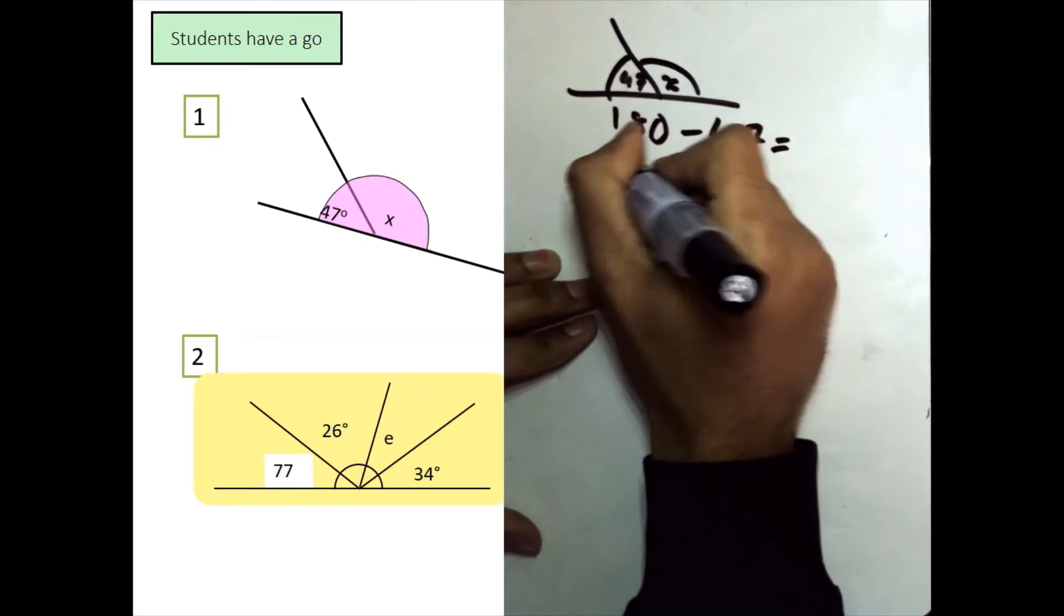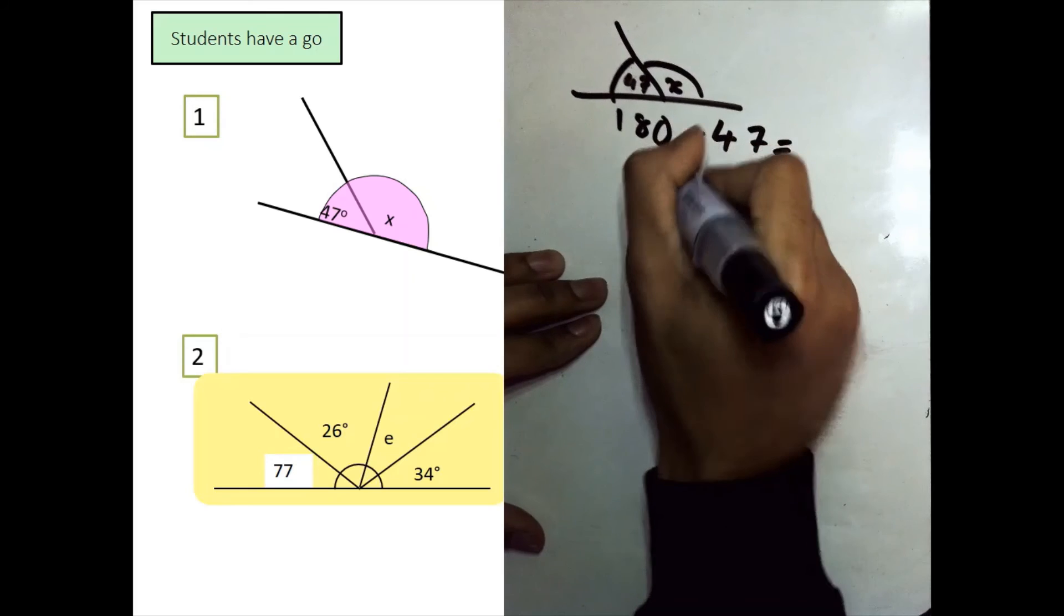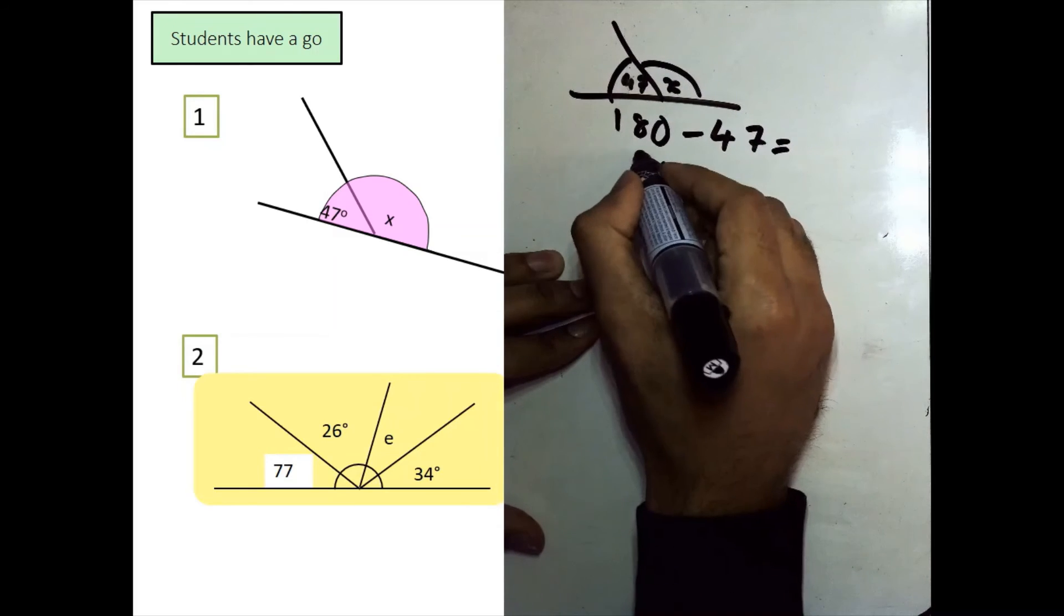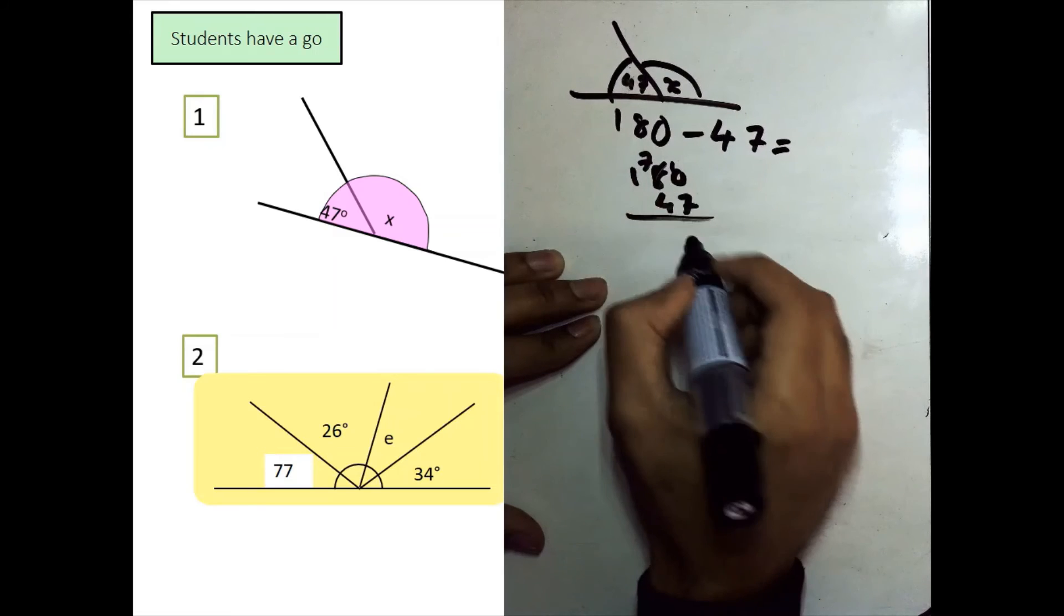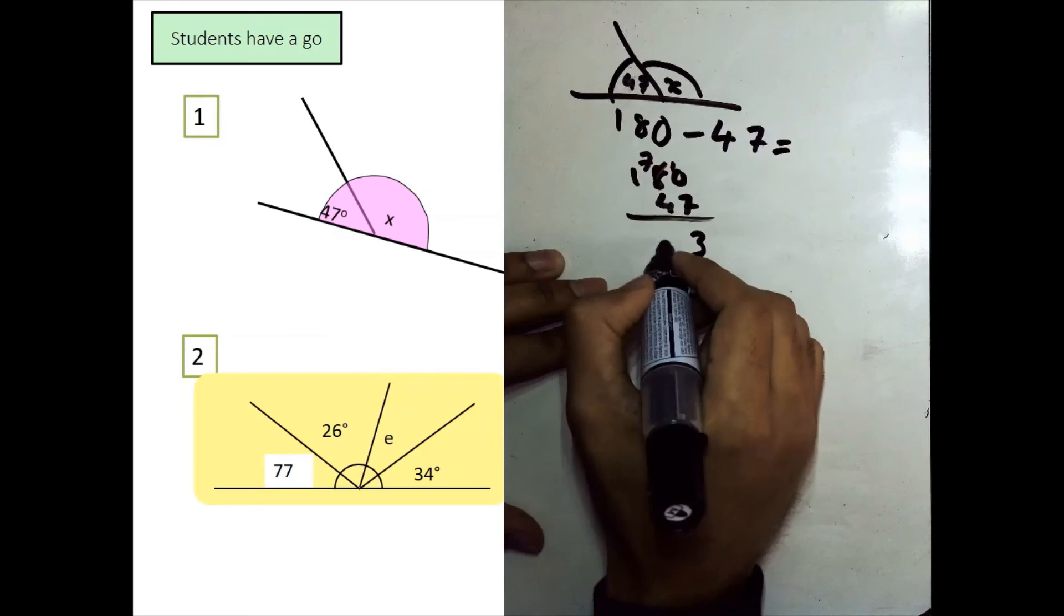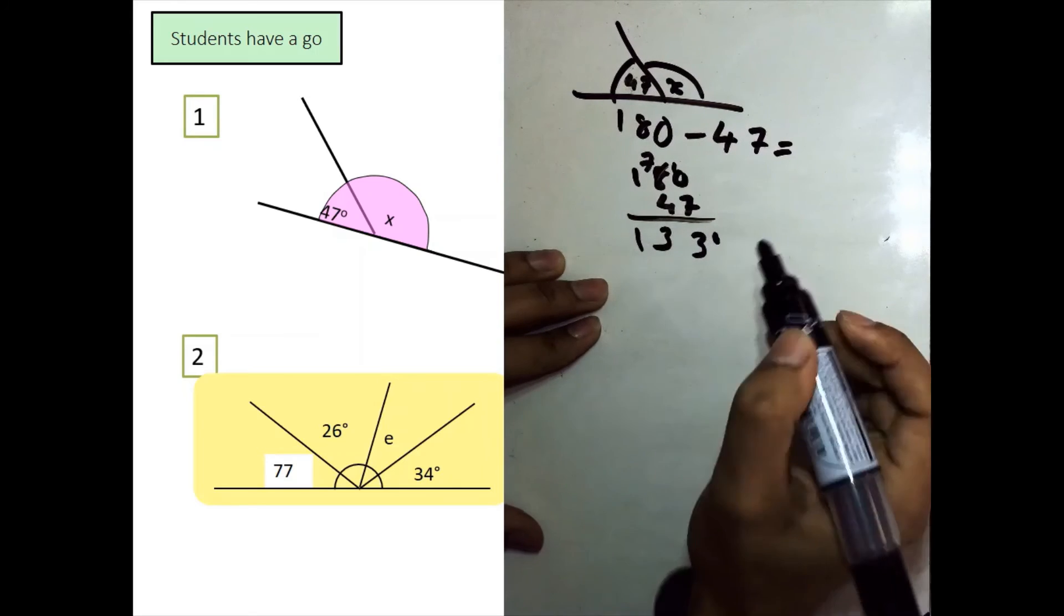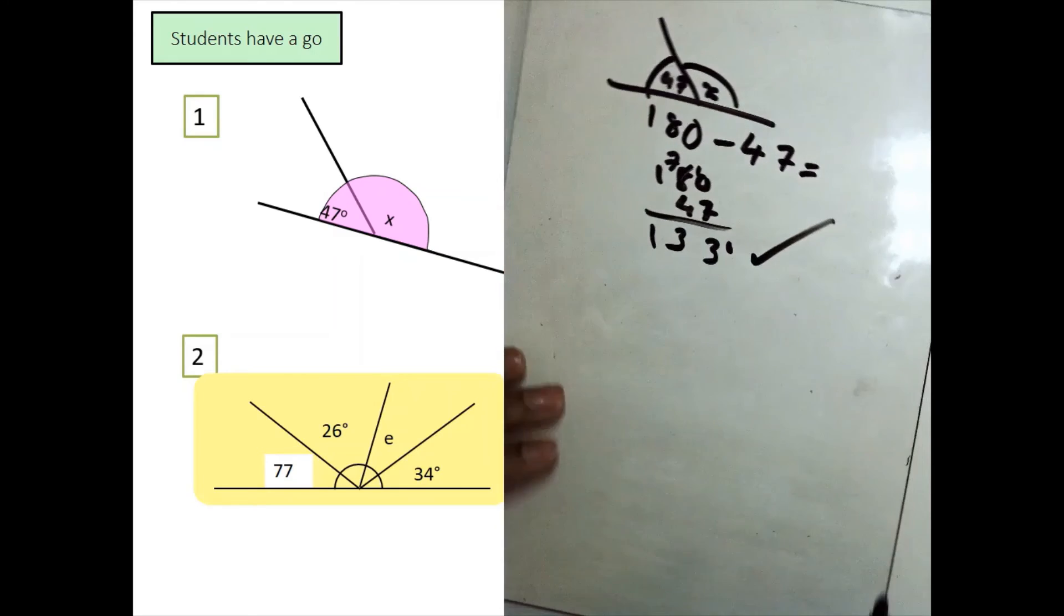Column subtraction, 0, take away 7, we can't do. Make that a 7, take that 10. 10, take away 7, it's 3. 7, take away 4, it's 3. And we get left with 133 degrees. Okay, so if you've got 133 degrees, you can give yourself a tick.